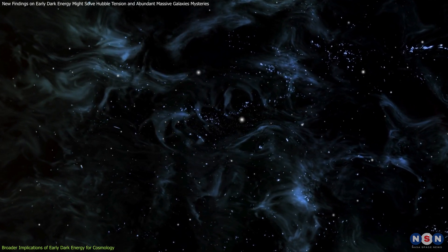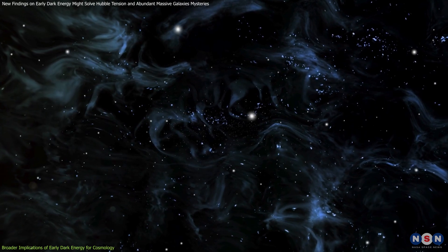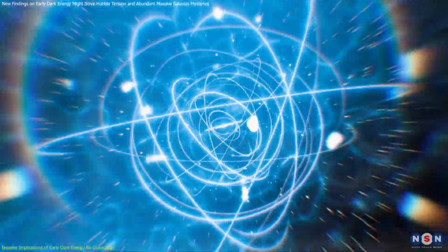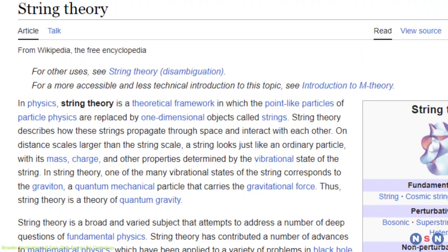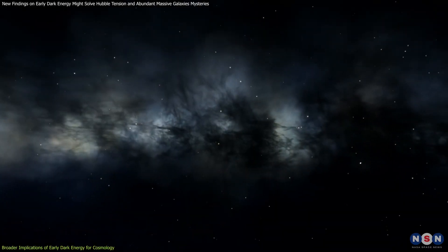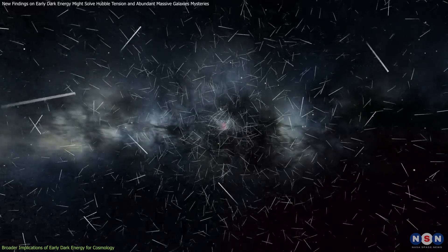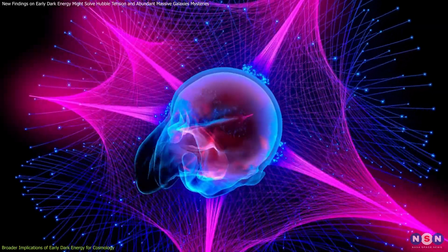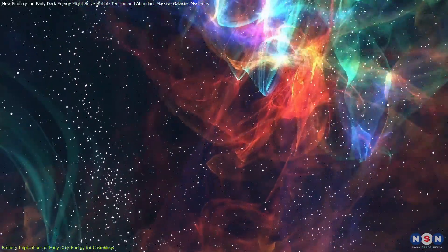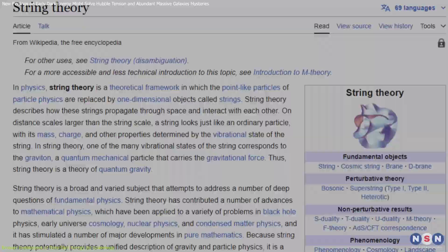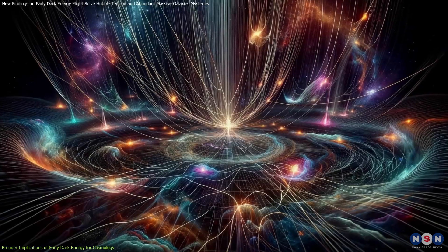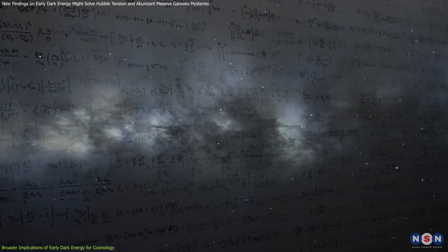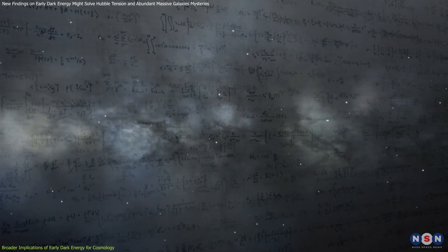Now, let's consider the cross-disciplinary impact and theoretical implications of early dark energy. This concept doesn't just affect cosmology. It could have profound implications for particle physics and theoretical frameworks like string theory and quantum gravity. If early dark energy is confirmed, physicists might need to look for new particles or forces that could produce such an effect. This could lead to the discovery of axion-like particles or other unknown components that extend the standard model of particle physics. Furthermore, theories like string theory, which seeks to explain all fundamental forces of nature in a single framework, could provide the mathematical structure needed to understand early dark energy's behavior.